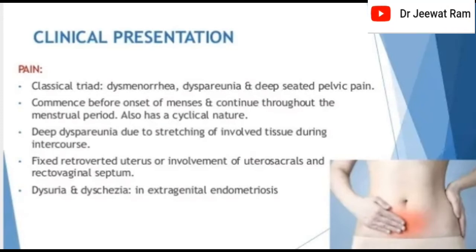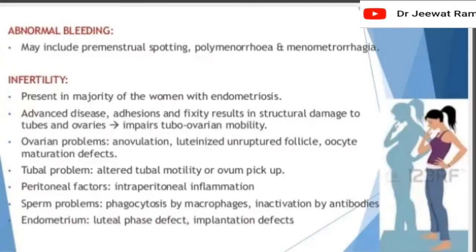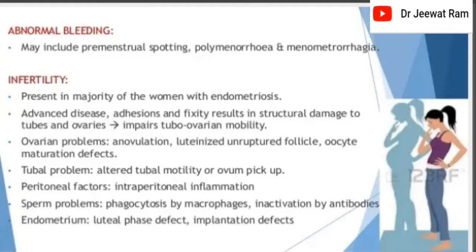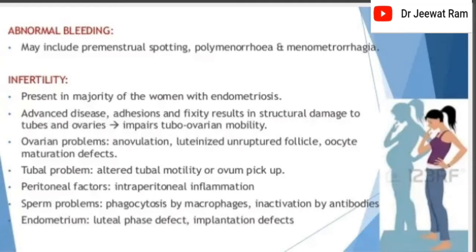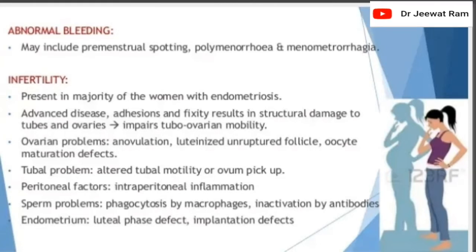Fixed retroverted uterus or involvement of utero-sacrals and recto-vaginal septum causes deep dyspareunia. Abnormal vaginal bleeding may include premenstrual spotting, polymenorrhea, and menometrorrhagia. Infertility is present in the majority of women with endometriosis. In advanced disease, fibrosis and fixity result in structural damage to tubes and ovaries, impairing tubal-ovarian mobility. Ovarian problems include anovulation, luteinized unruptured follicle, and oocyte maturation defects.